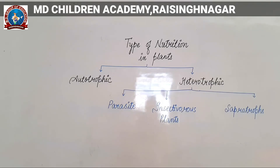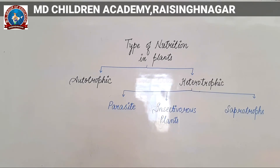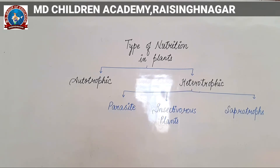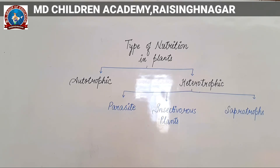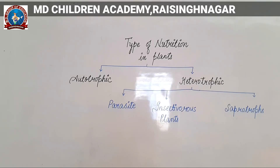Till now, we discussed the type of nutrition in plants. We covered autotrophic mode of nutrition, where we studied about plants which can prepare their own food.